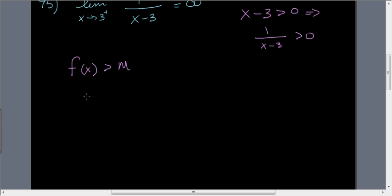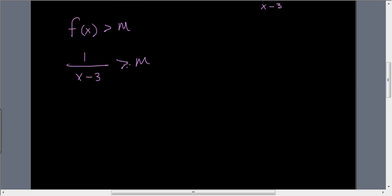Well, our function is 1 over x minus 3. It's greater than m. So let's take a look at this, and let's say that, if I solve for x minus 3, or I can just flip both sides. Let's do that. Let's flip both sides. So when we flip both sides, x minus 3 comes up to the top, m goes underneath, and now because we flipped it or we raised it to a negative exponent, we have to flip the sign. If you don't remember that rule, just go ahead and look it back up.